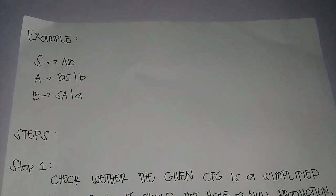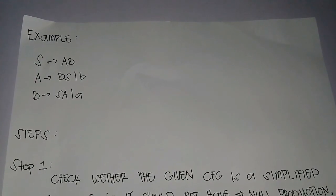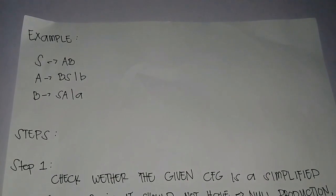Example grammar: S goes to AB. A goes to BS and B. B goes to SA and A.